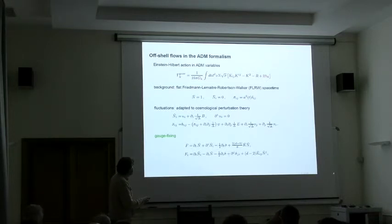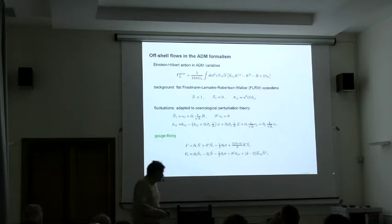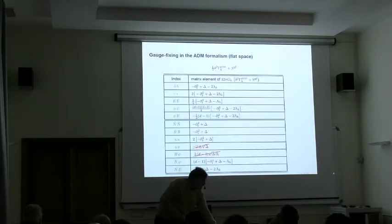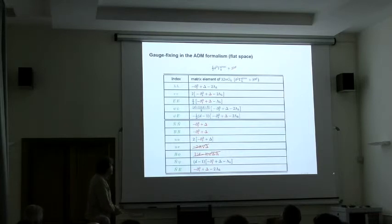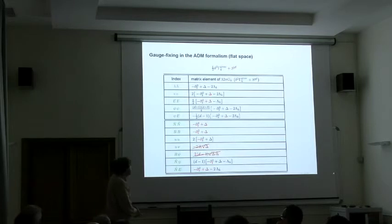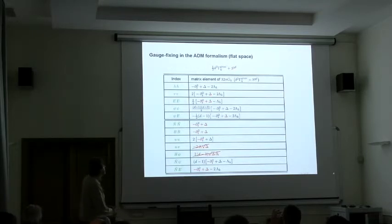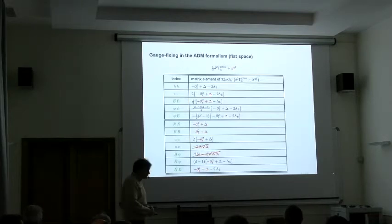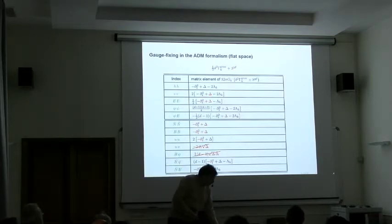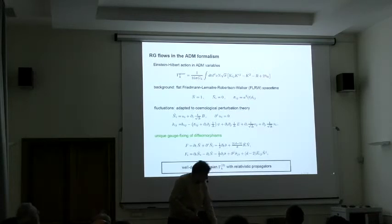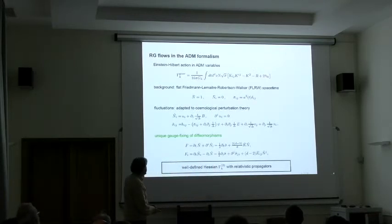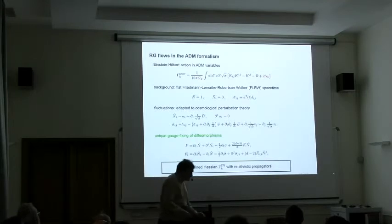Let's gauge fix the theory, adding these terms. And then you see, with choosing proper gauge fixing, you can get a Hessian which propagates all the fields in a standard way. This is crucial. By demanding that all fields have a standard propagator in a flat background, this fixes your gauge fixing uniquely. After dealing with this, we have a well-defined Hessian. We can actually substitute this ansatz in flow equation and evaluate.